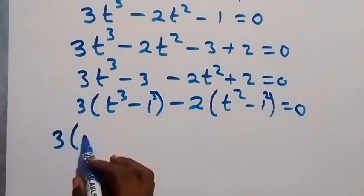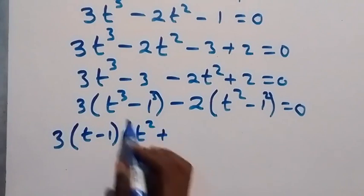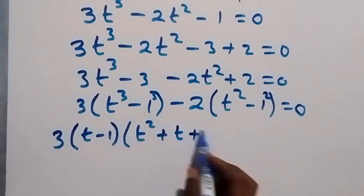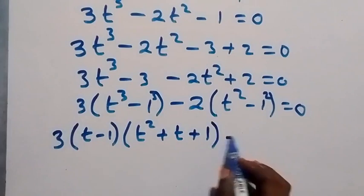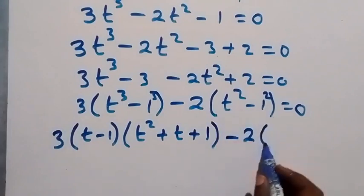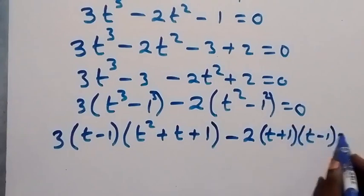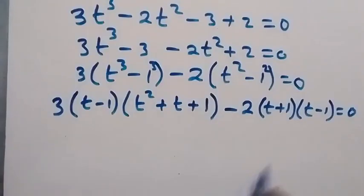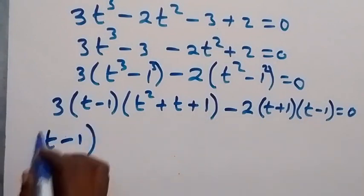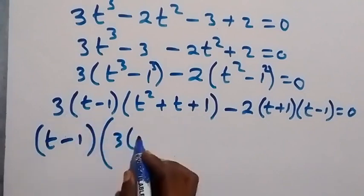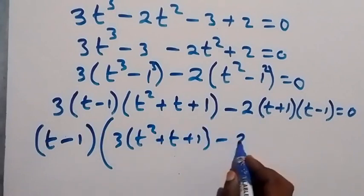Following the difference of two cubes, we get 3 multiplied by (t minus 1) times (t squared plus t plus 1), and for the difference of two squares we get minus 2 times (t plus 1)(t minus 1).